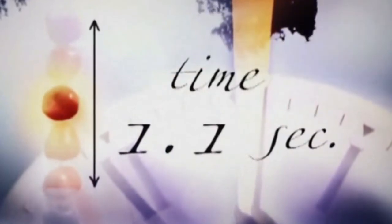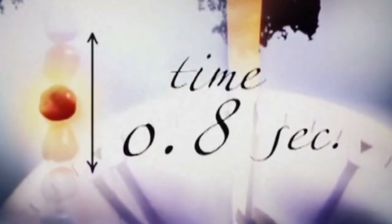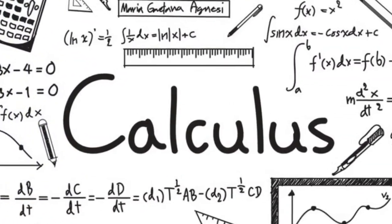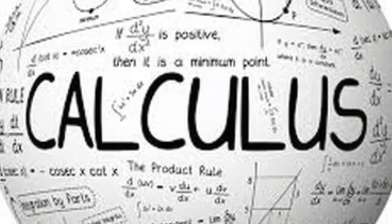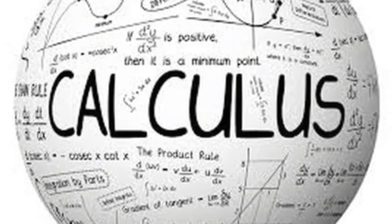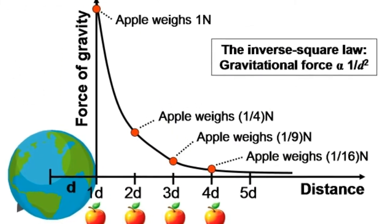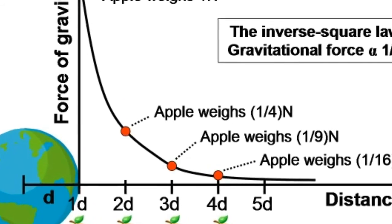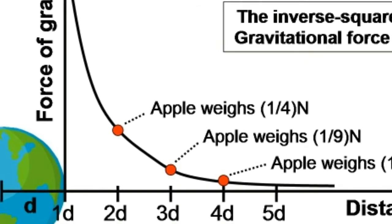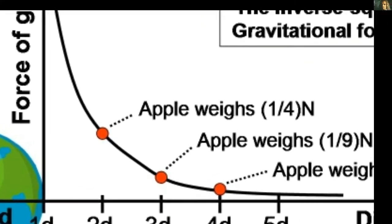Newton wanted to find the speed of an apple at any instant in time, which was not possible using average velocity alone. He needed to find the average velocity over a very small time interval tending to zero but not equal to zero. For this reason, Newton invented a new branch of mathematics called calculus, which is now the backbone of modern science. Using calculus, he proved the inverse square law of gravity: if an apple is twice as far from Earth's center, the gravitational force is four times less.